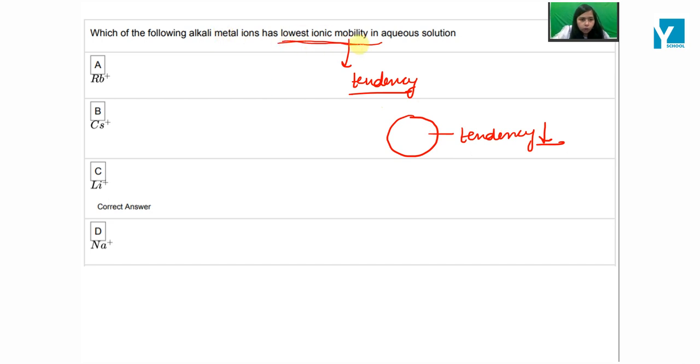If we ask the lowest ionic mobility, which will be the size of the size?